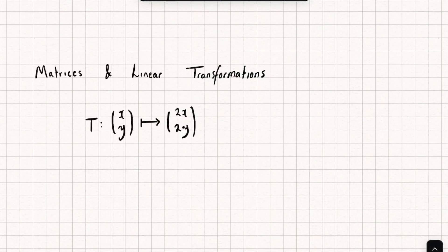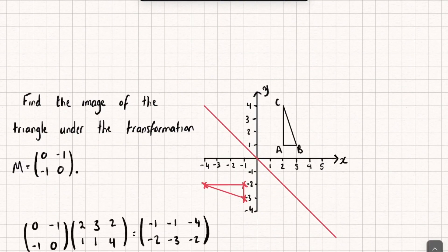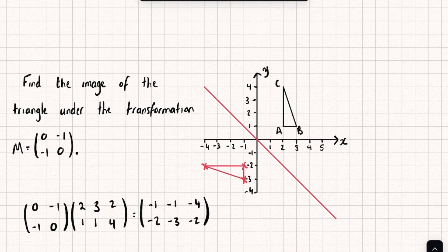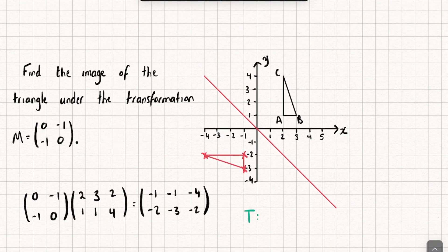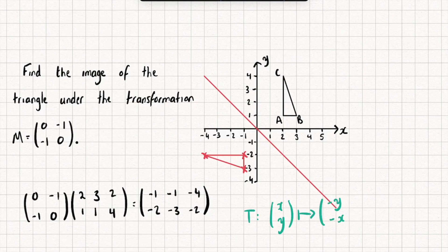If we wanted to use our other notation, this notation up here, we could actually describe this transformation like so. We could say it's a transformation, say T, where it takes any given points (x, y) and maps them to a new point which has the coordinates (-y, -x). You can see for yourself that this works.